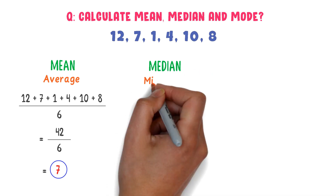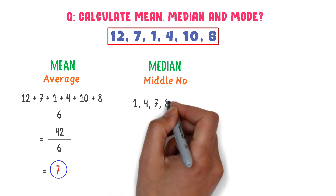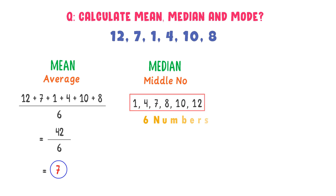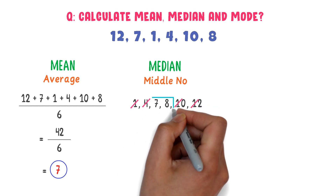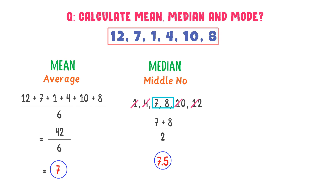What about median? We know that median is the middle number, so I arrange all these numbers in ascending order: 1, 4, 7, 8, 10, 12. Now listen carefully — there are 6 numbers present in this data set. In case of even numbers, I use the trick: I cancel one number from the left side and one from the right side, then repeat until two numbers remain. These two numbers are the middle part of the data set, so I find their mean. 7 plus 8 divided by 2 gives 15 divided by 2, which equals 7.5. So the median of this data set is 7.5. In case of even numbers, use this trick to find the median.